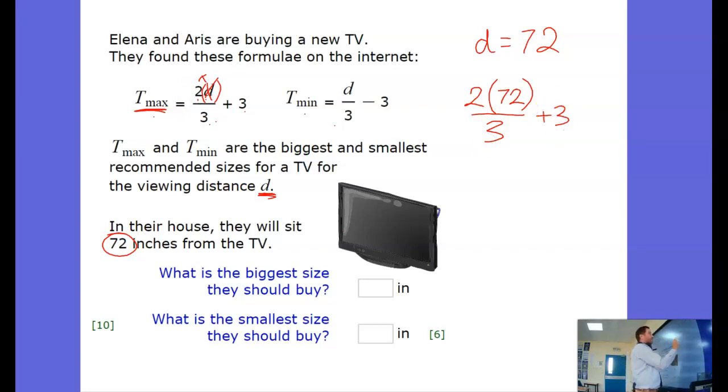2 times 72 is going to be 144. Dividing that by 3 gives me, let's do it like that, 3s into that go 4 remainder 2, 3s into that go 8, I get 48.